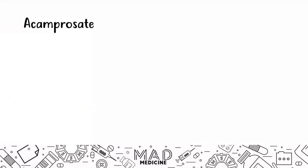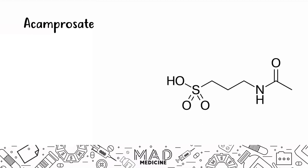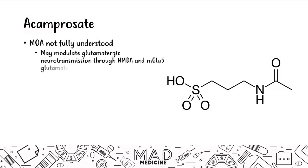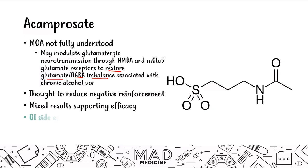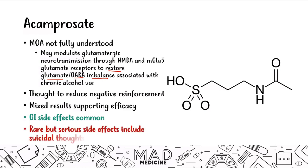The third drug is acamprosate. We don't fully know its mechanism of action, but it's thought to modulate glutamatergic neurotransmission through NMDA receptors, potentially restoring the chronic imbalance of GABA and glutamate associated with alcohol abuse. It is thought to reduce negative reinforcement. There are mixed results on its efficacy and common GI side effects, but importantly, a rare and serious side effect includes suicidal thoughts and ideation — patients may have a higher risk for suicide.